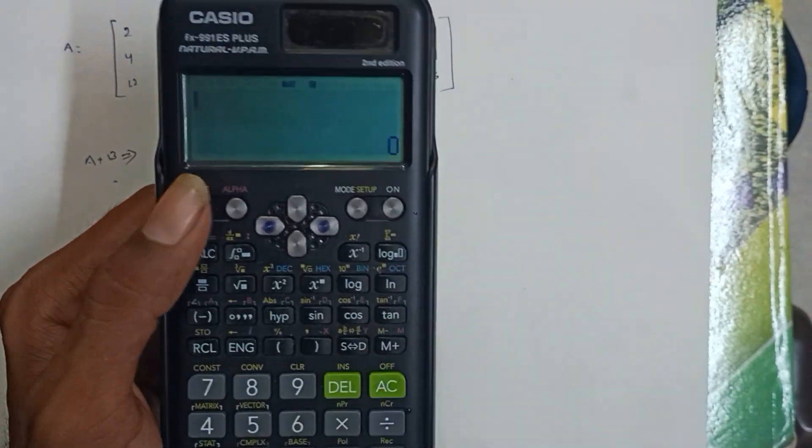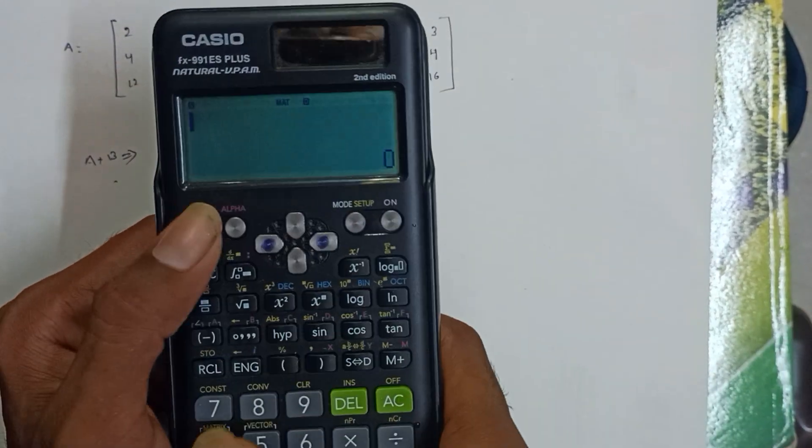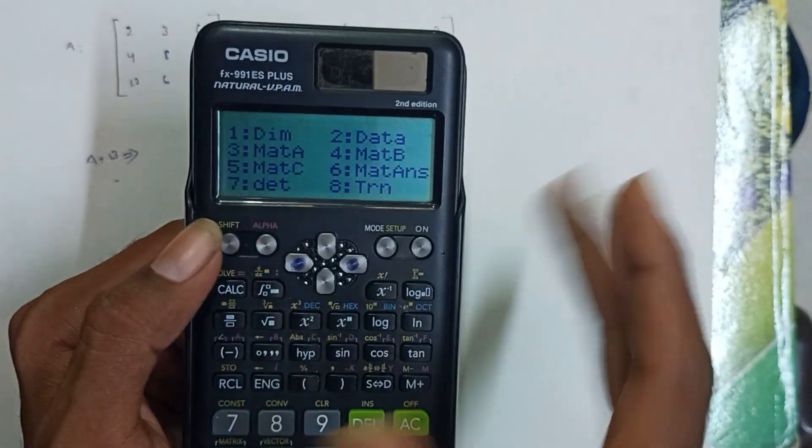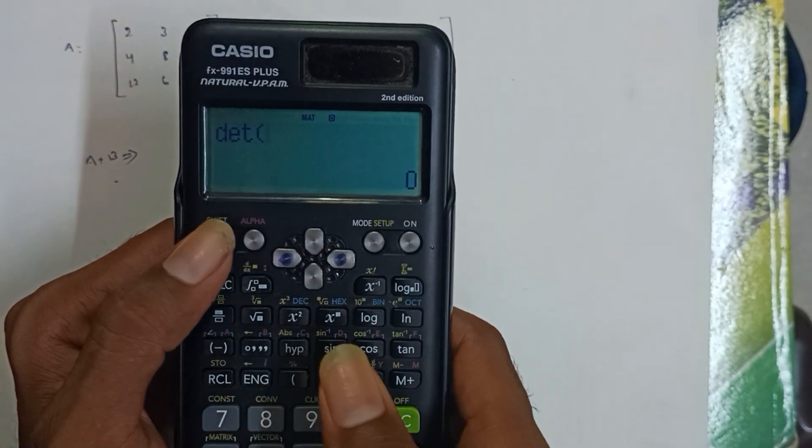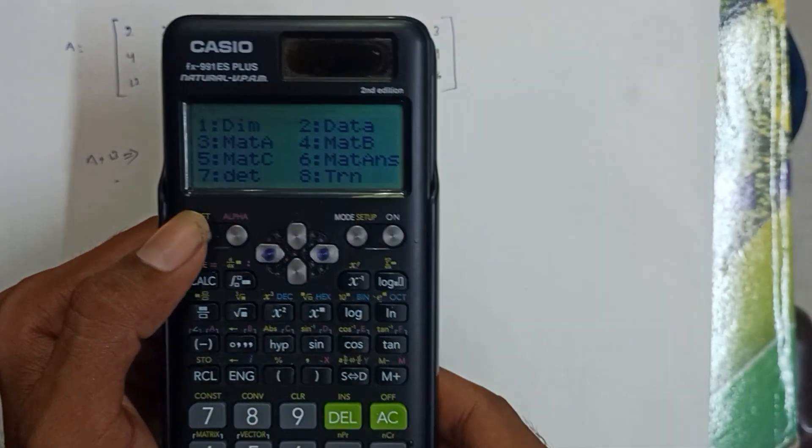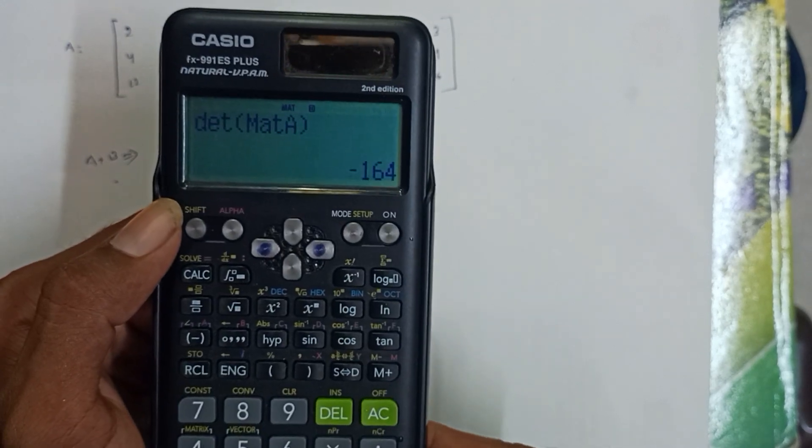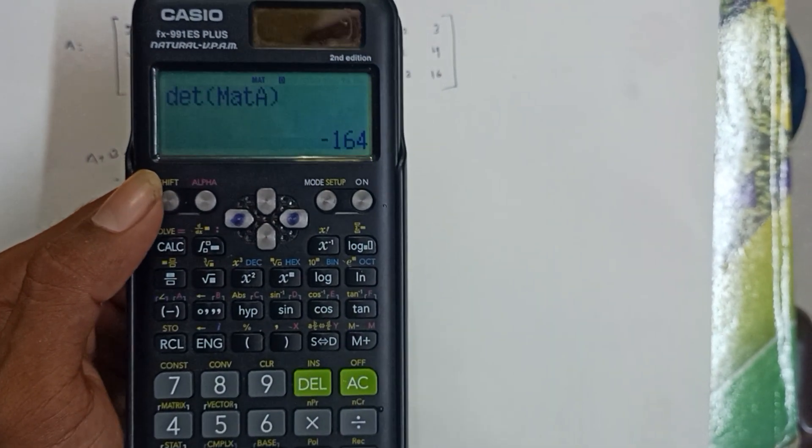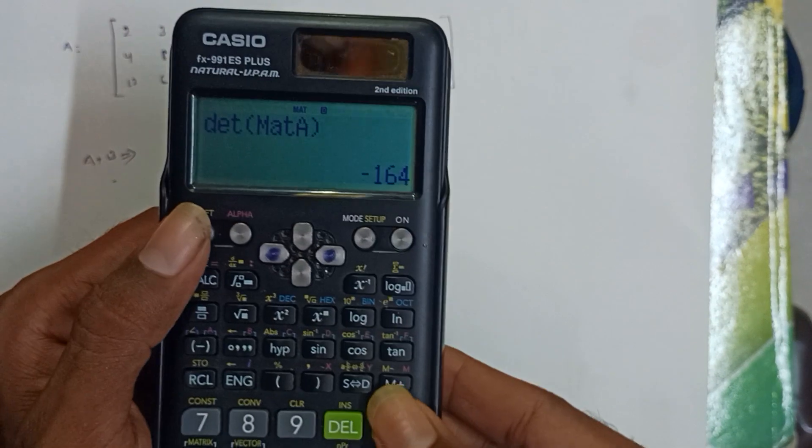Next, for the determinant. We calculate the determinant of one matrix. Press 7 for determinant, then press 3 to select Matrix A. Equal to gives us -164 as the determinant.